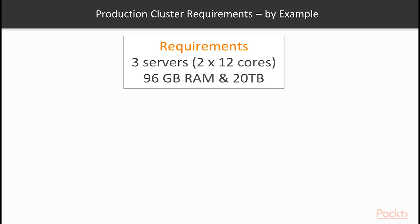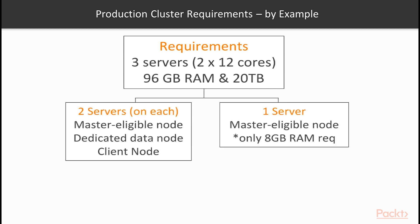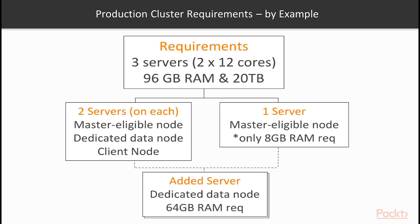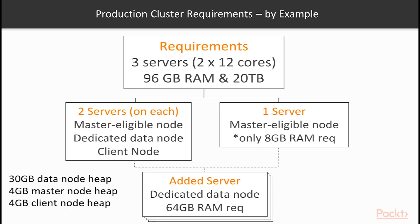96 gigs of RAM only needs to be in two of the three servers, as the third server is added so that we can have a third dedicated master node available. In the other two servers, there should be one dedicated master node and one dedicated data node, plus one client node as well. If you need to add more servers for data nodes, you can scale out by adding a server with up to 64 gigs of RAM and 20 terabytes of disk space for an additional data node. For the heap: allocate 30 gigs for the data node, 4 gigs for the master node, and 4 gigs for the client node.